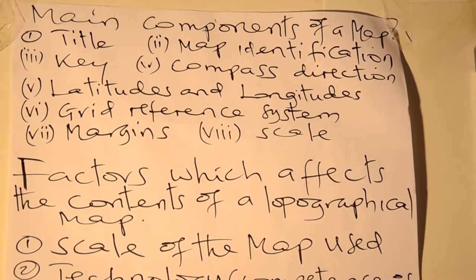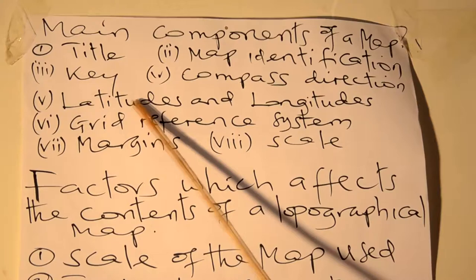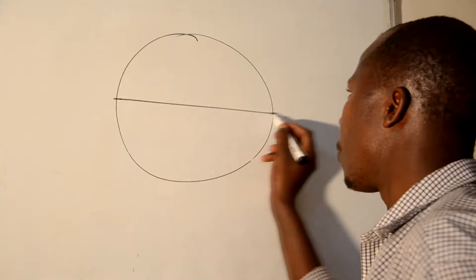Dear students, what is the meaning of latitude? Latitude is the angular distance measured in north and south of the equator. For instance, this is the globe. There is a certain line here which divides the Earth into two parts, which is called the equator.